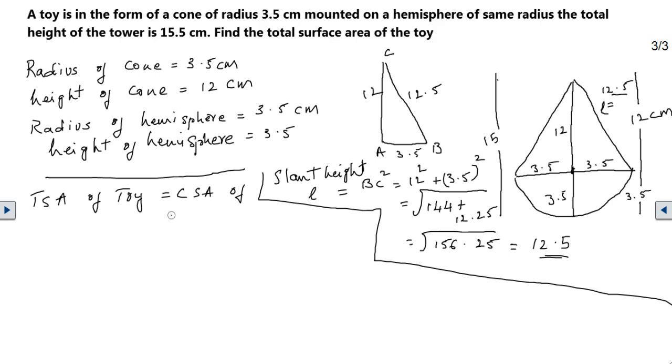TSA of the toy equals curved surface area of the cone plus curved surface area of the hemisphere. The formula for CSA of a cone is pi r l, and the CSA of the hemisphere is 2 pi r squared.